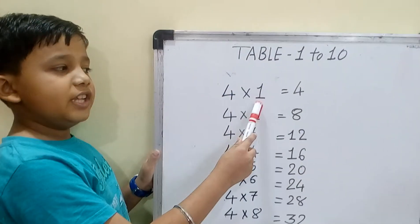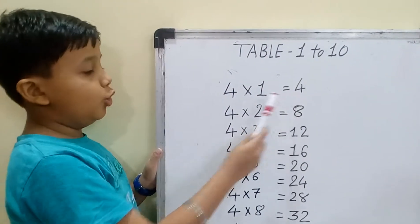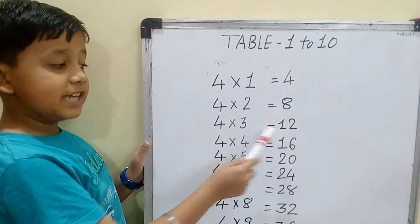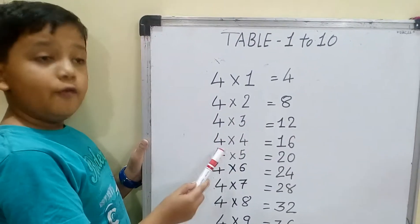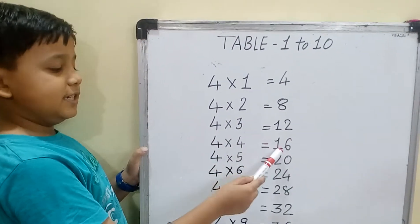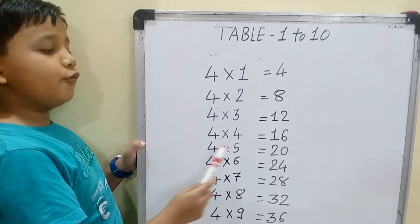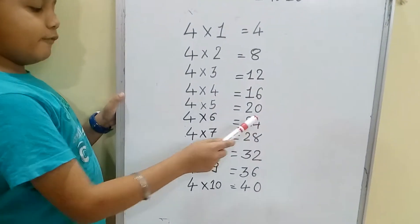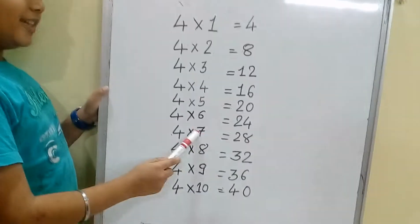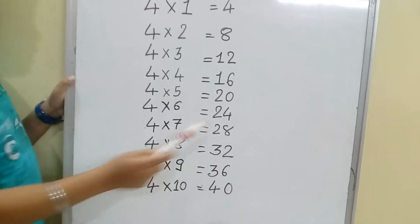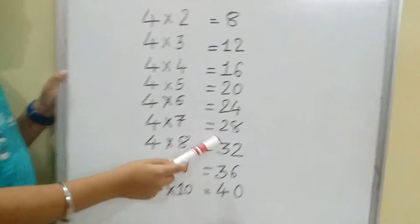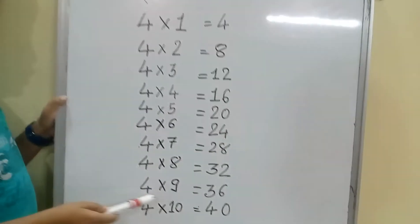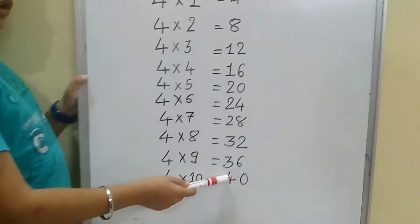Our fourth table is the table of 4. 4 one is 4, 4 two is 8, 4 three is 12, 4 four is 16, 4 five is 20, 4 six is 24, 4 seven is 28, 4 eight is 32, 4 nine is 36, 4 ten is 40.